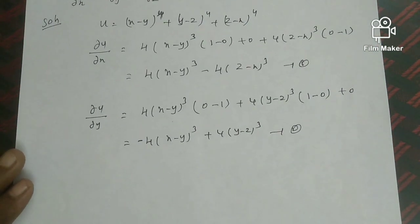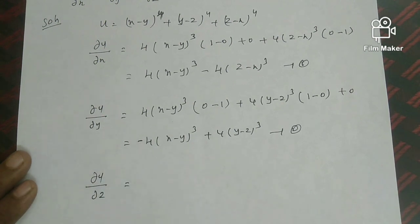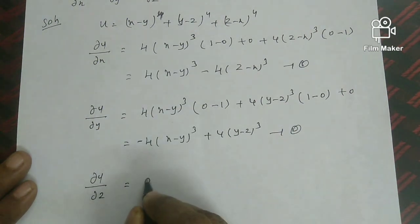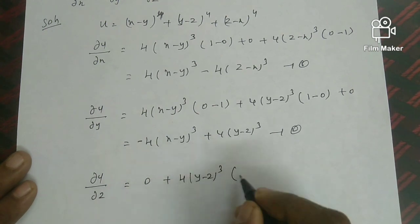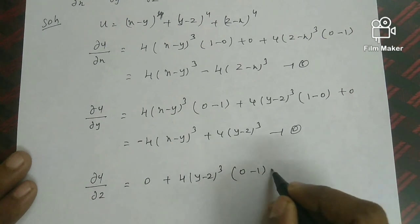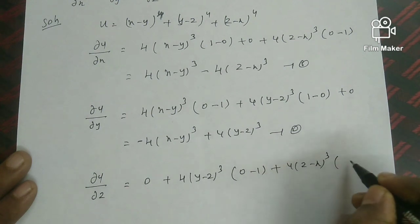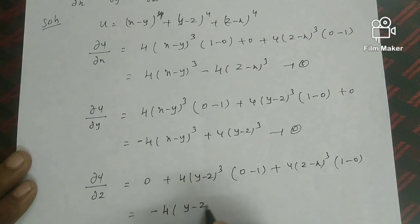Computing ∂u/∂z with x and y treated as constant: differentiating (x-y)⁴ gives 0. Differentiating (y-z)⁴ gives 4(y-z)³ × (-1) = -4(y-z)³. Differentiating (z-x)⁴ gives 4(z-x)³ × 1 = 4(z-x)³. So ∂u/∂z = -4(y-z)³ + 4(z-x)³. This is equation 3.